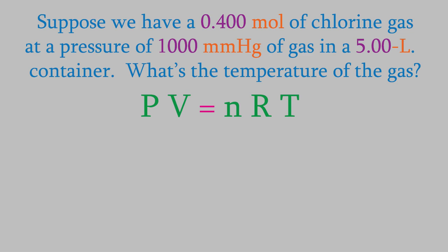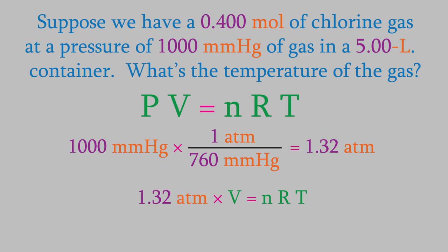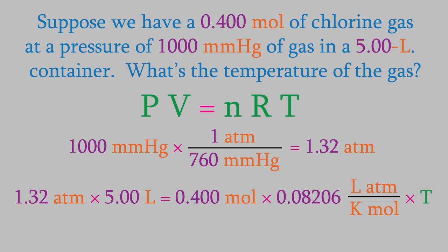We want to solve for T, and we have all the information we need. The pressure is 1,000 millimeters of mercury. Remember, we need to make sure we use the correct unit, which is atmospheres, for pressure. If you don't remember how to convert millimeters of mercury to atmospheres, you'll want to check video 35, where we talked more about pressure. In that video, we saw that there are 760 millimeters of mercury in an atmosphere. So, our pressure here is 1.32 atmospheres. The volume is 5.00 liters, and n is 0.400 moles. You might recall from the last video that r is a constant, 0.08206 liters times atmospheres over kelvins times moles. Solving for the temperature gives us an answer of 200 Kelvin.